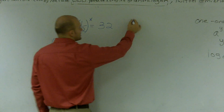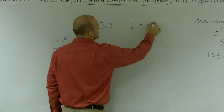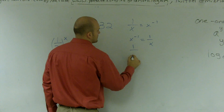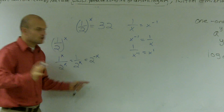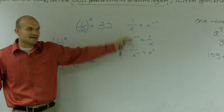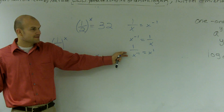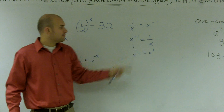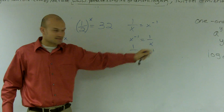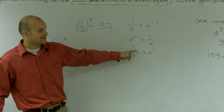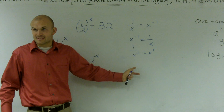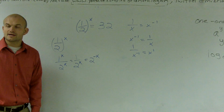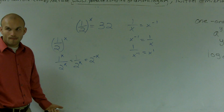I can write this as 2 to the negative x. You have to know this property — memorize it. Anytime you have 1 over x, you can rewrite that as x to the negative 1. Whenever you have x to the negative 1, you can rewrite that as 1 over x. Whenever you have 1 over x to the negative 1, you can rewrite that as x to the 1. Memorize that. Whenever the exponent goes up, the negative goes away.